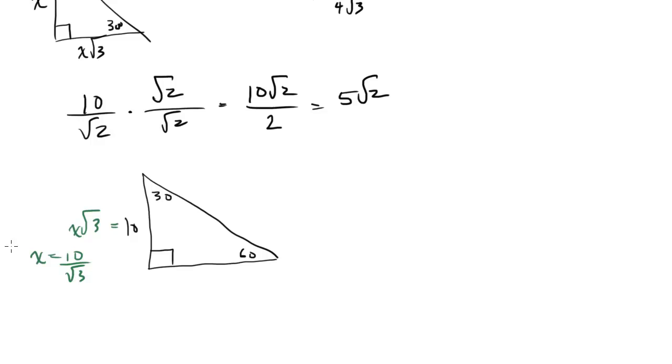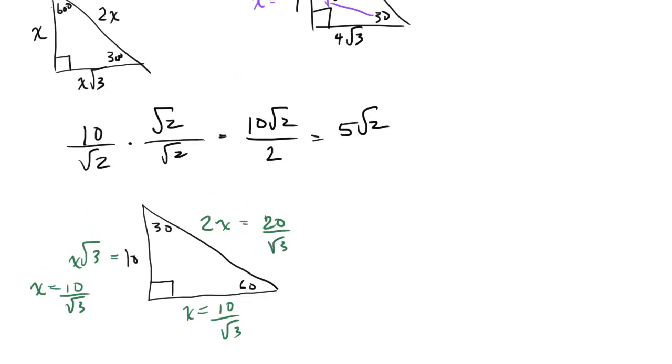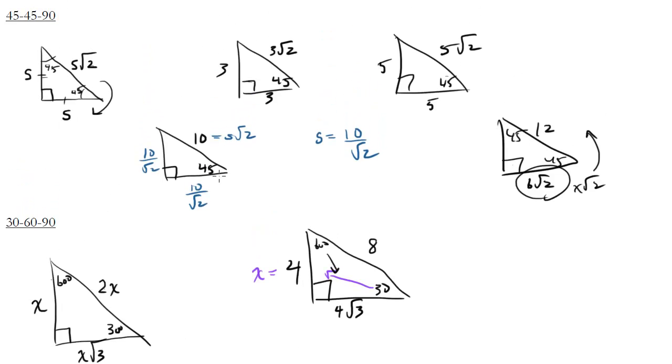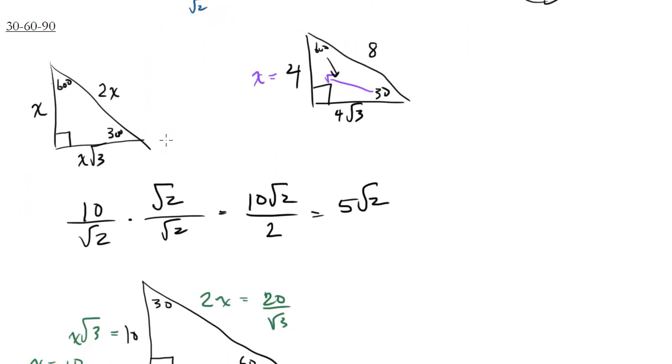Well, 10 over root 3, well, that's my x. So I remember the side across from the 30 is x, so that's just going to be 10 over root 3. And the side across from the hypotenuse is 2x, which in this case would be 2 times 10 over root 3 or 20 over root 3. So these don't come up too much. Usually it's just going to be a straightforward application of the 45, 45, 90 or the 30, 60, 90 triangles. But just in case, that's how you would handle them.